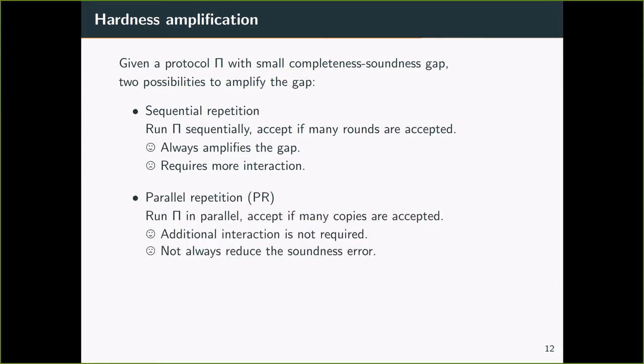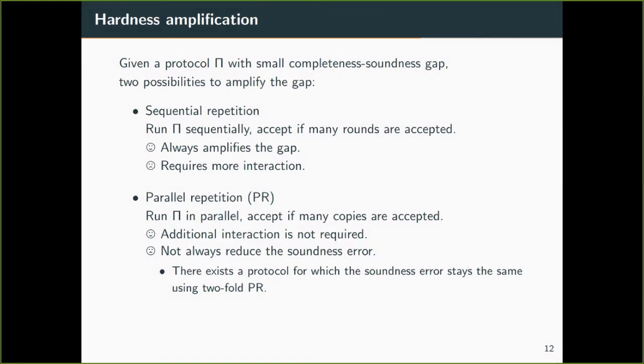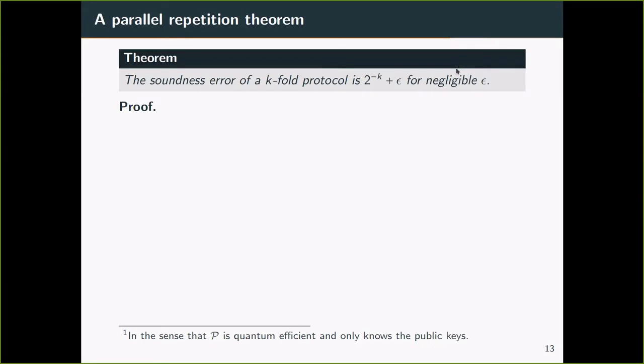The other approach is by parallel repetition, which means that you run the protocol in parallel, and then you accept if many copies are accepted. What's nice about it is that no more interaction is required. But the downside is that it does not always reduce the soundness error. In fact, there is a counterexample for which the soundness error stays the same using a two-fold repetition.